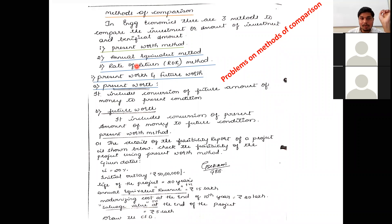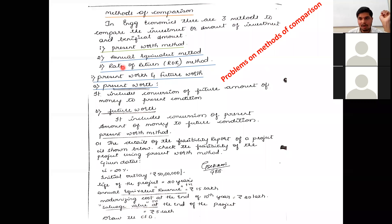Your syllabus includes only two of these methods: the Present Worth Method and the Annual Equivalent Method. The ROR method is not in your syllabus.